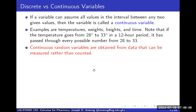On the other hand, if your variable can assume values in the interval between two given values, then the variable is called continuous. Examples of continuous variables include temperatures, weights, heights, and time. For instance, if the temperature goes from 28 degrees to 38 degrees in a 12-hour period, that means it has passed through every possible value between 28 and 38 — moving through 28.01, 28.001, 28.00001 — and those numbers are really uncountable.